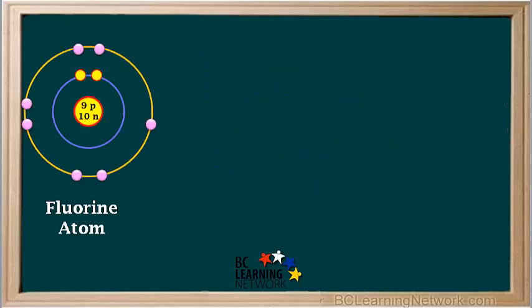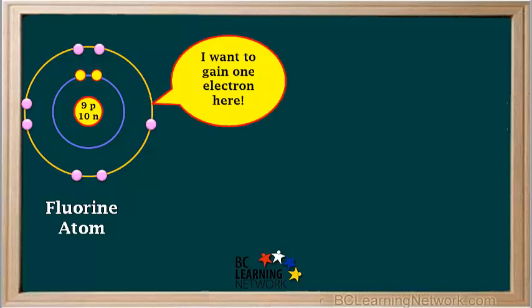Now let's consider a fluorine atom. Its valence shell is shown as an orange circle, and you can see that it has seven valence electrons, which are shown as small pink circles. Atoms with five to seven valence electrons tend to gain electrons to fill up their valence shells and achieve stable noble gas electron arrangements. Fluorine could do this by gaining one electron.